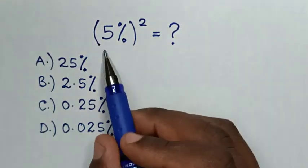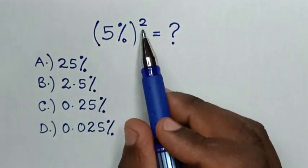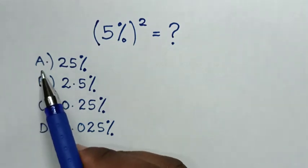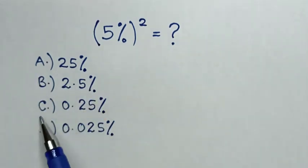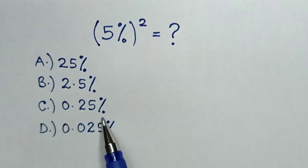Hello! How to solve 5% brackets square? Select between the answers: A, 25%; B, 2.5%; C, 0.25%; D, 0.025%.